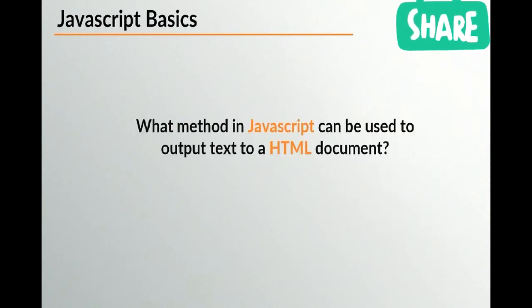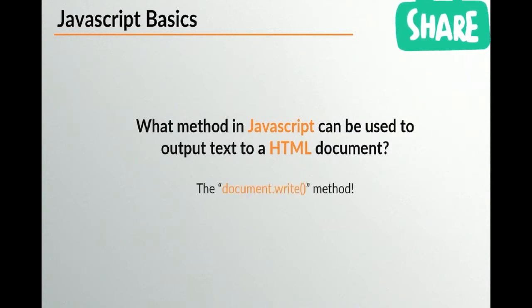What method in JavaScript can be used to output text to a HTML document? The bare-bones answer is the document.write function. The document.write method is the correct method that can be used to output text to a HTML document.